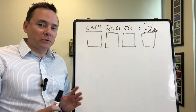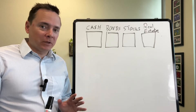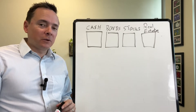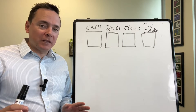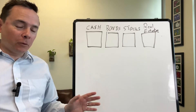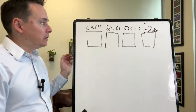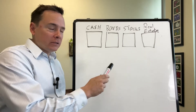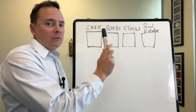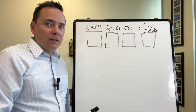There are four places that any human being can put their money — four legitimate places. When it comes down to it, those four places would be cash, bonds, stocks, and real estate. That's basically it.